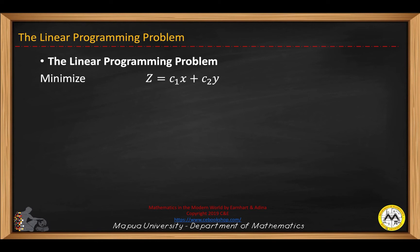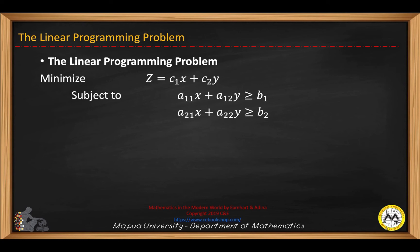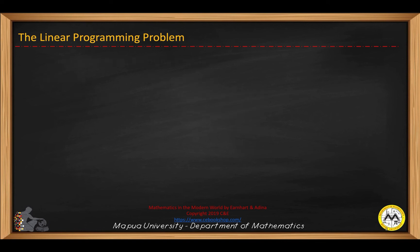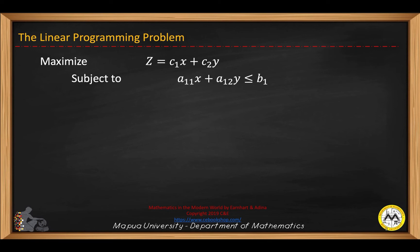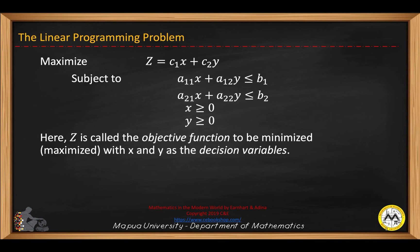The linear programming problem basically consists of an objective function — it's either a minimized or a maximized linear programming problem. For a minimized objective function, the constraints are mostly greater-than-or-equal inequalities. For maximizing the objective function subject to restrictions, the major inequalities are less-than-or-equal. We call x and y the decision variables.